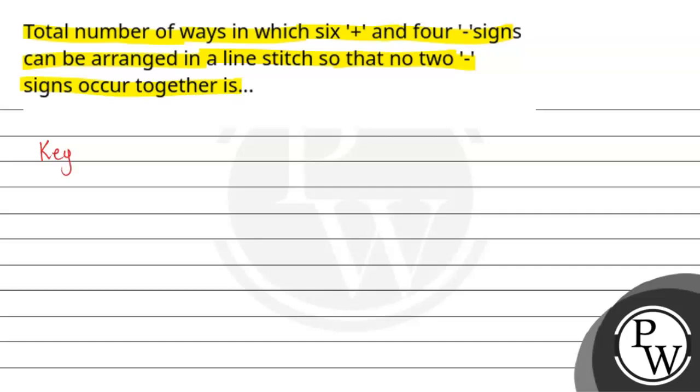The key concept is permutation, that is nPr, and this can be written as n factorial upon n minus r factorial.